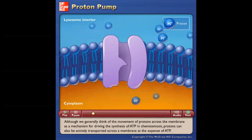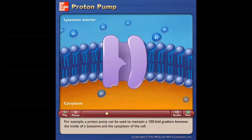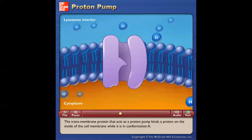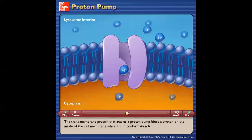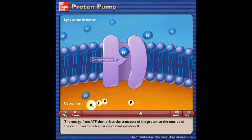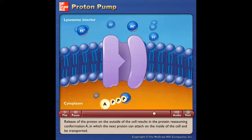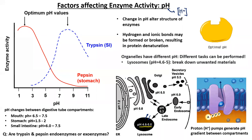Although we generally think of the movement of protons across the membrane as a mechanism for driving the synthesis of ATP in chemiosmosis, protons can also be actively transported across a membrane at the expense of ATP. For example, a proton pump can be used to maintain a 100-fold gradient between the inside of a lysosome and the cytoplasm of the cell. The transmembrane protein that acts as a proton pump binds a proton on the inside of the cell membrane while in confirmation A. The energy from ATP then drives transport of the proton to the outside through confirmation B. Release of the proton results in the protein reassuming confirmation A. That's how we maintain those pH gradients between the different organelles inside the cell.